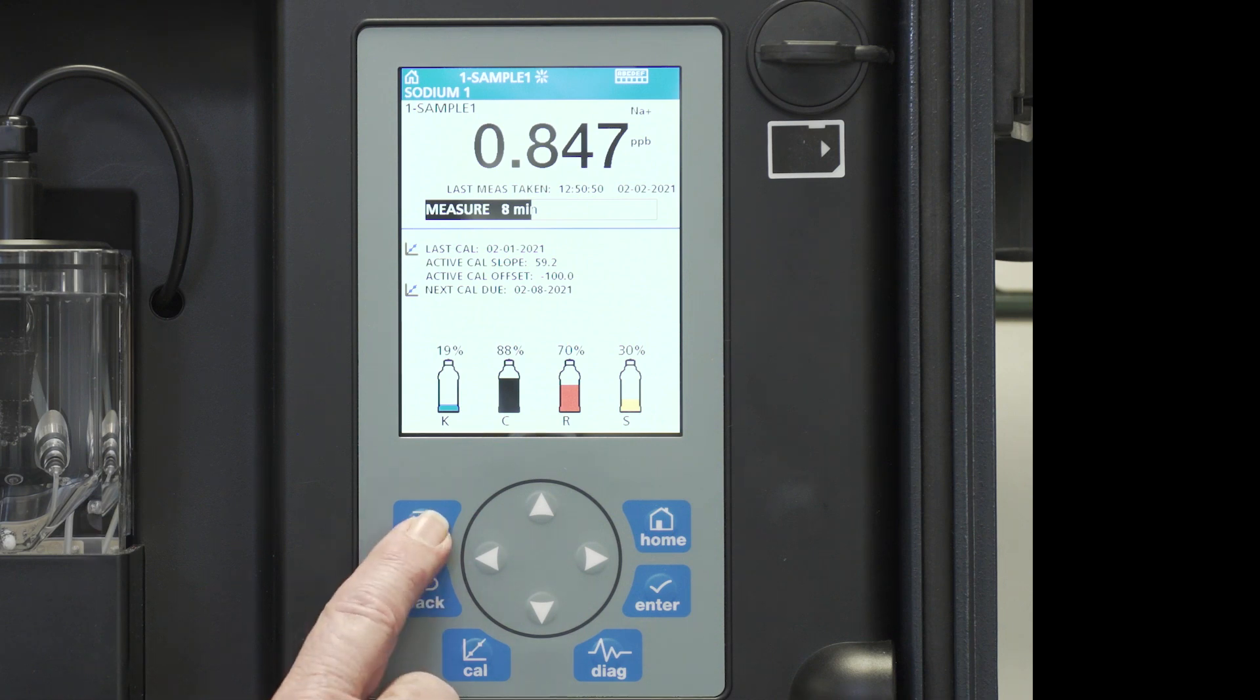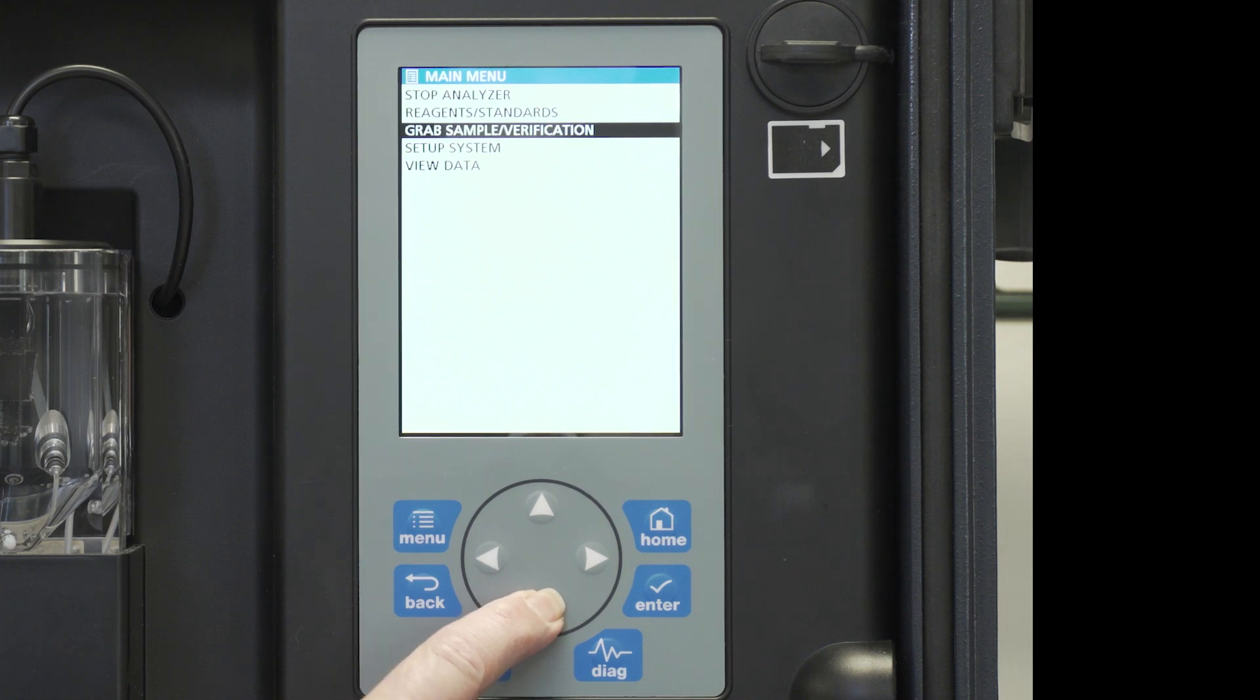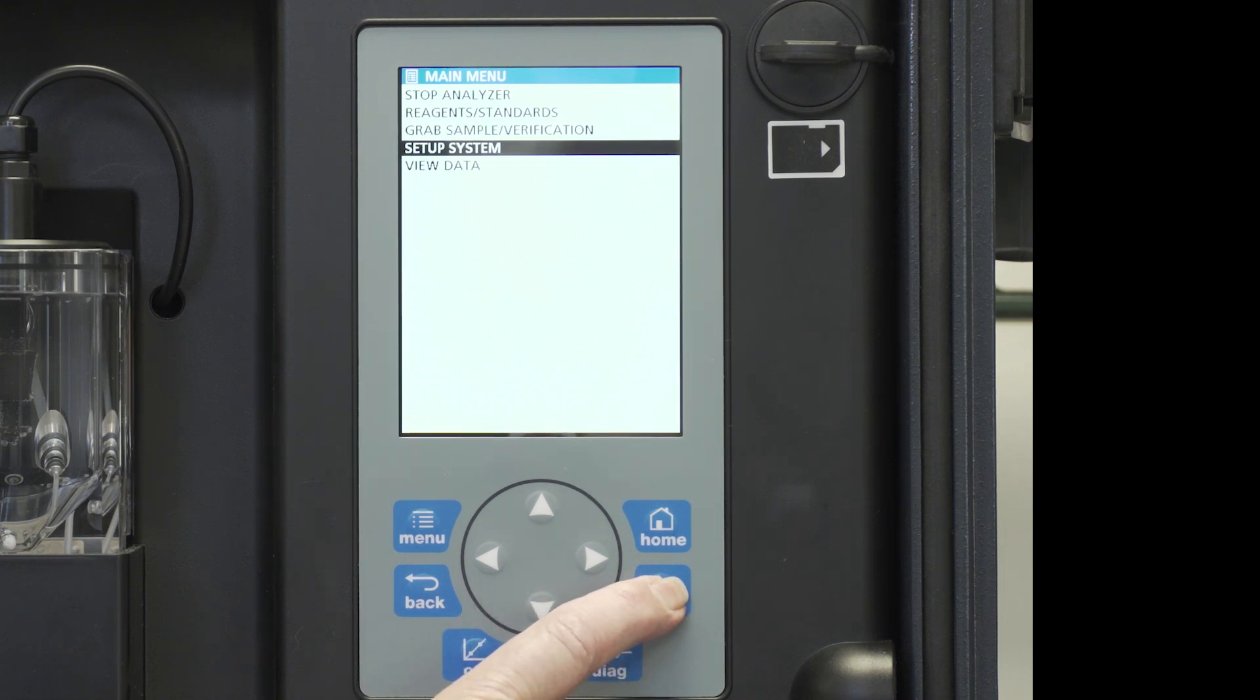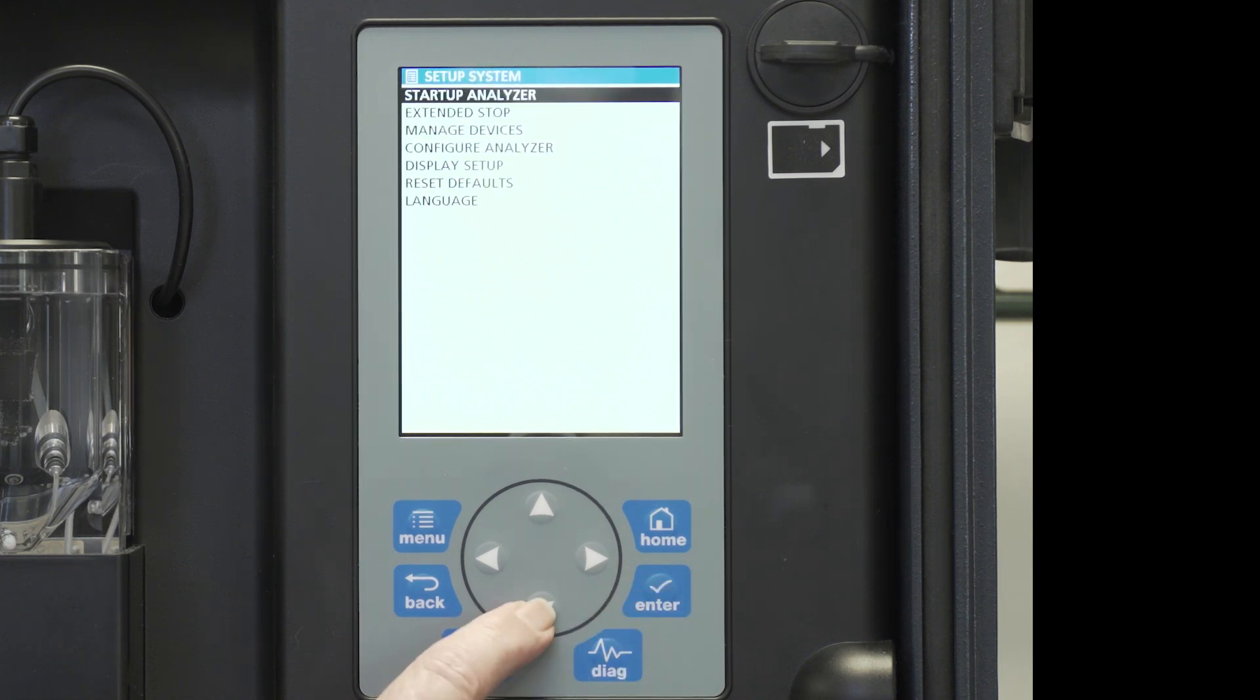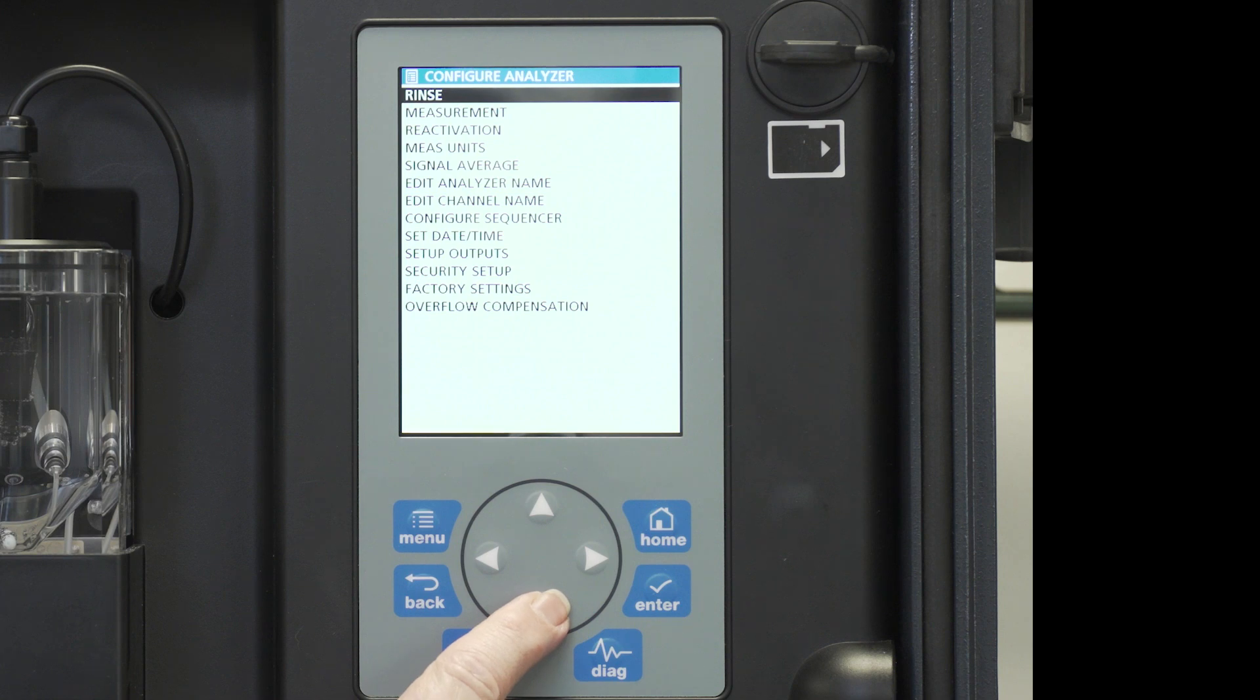We will go to menu and scroll down to system setup. Press enter. Move down to configure the analyzer. And then scroll down to reactivation.